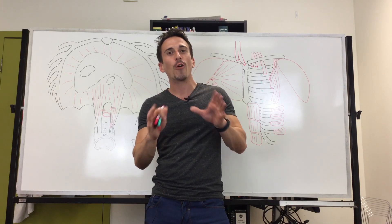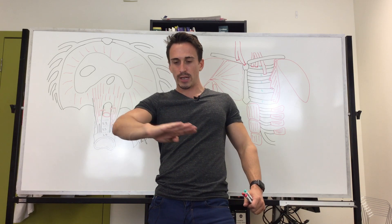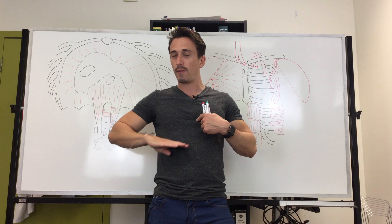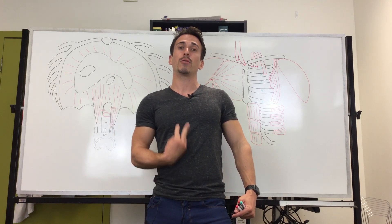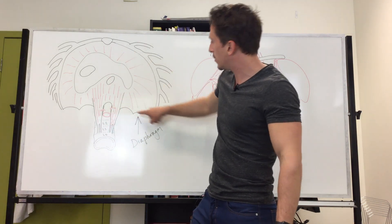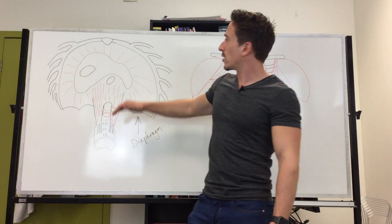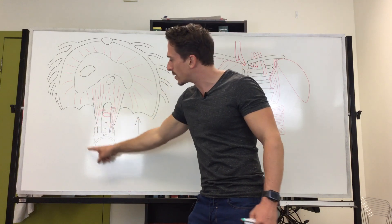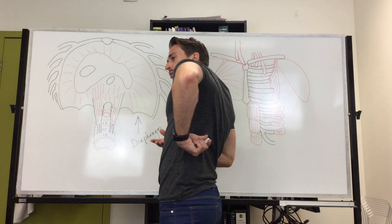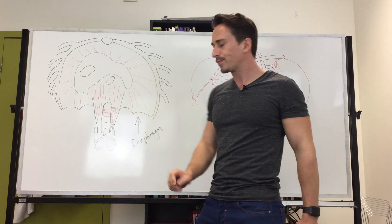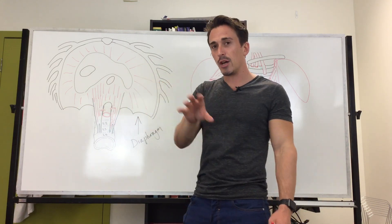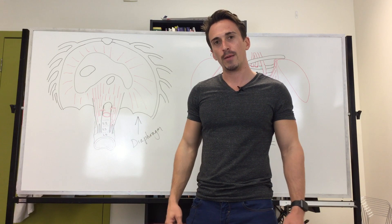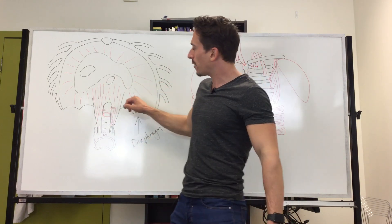Looking at a transverse section at the thoracic-abdominal junction, we're looking up through to the thoracic cavity at the diaphragm. You can see the xiphoid process of the sternum anteriorly, the ribs coming around, and the lumbar vertebrae L1 to L4 posteriorly. The diaphragm is attached by ligaments called the crura to the lumbar portion of the spine, and also to the thoracic wall and sternum.